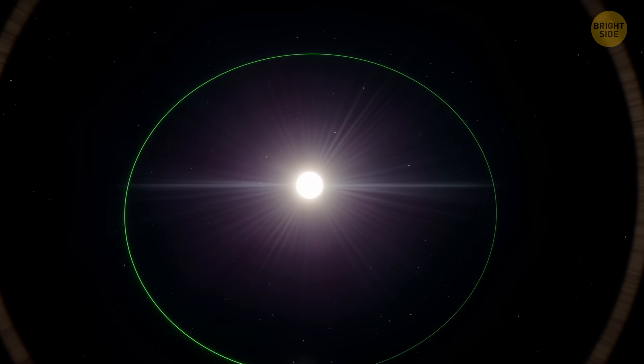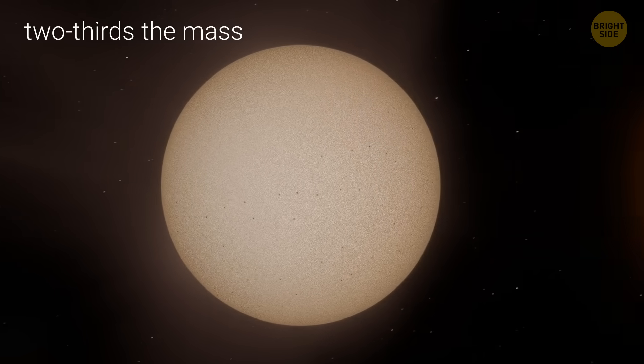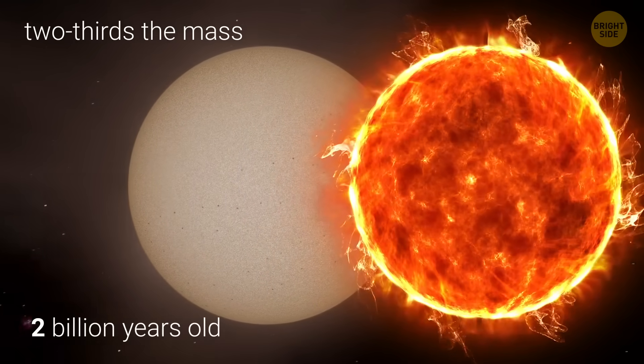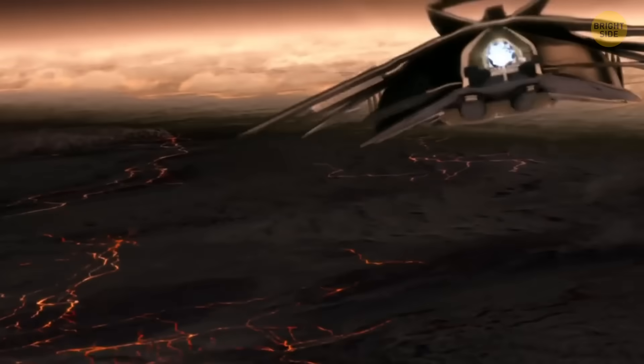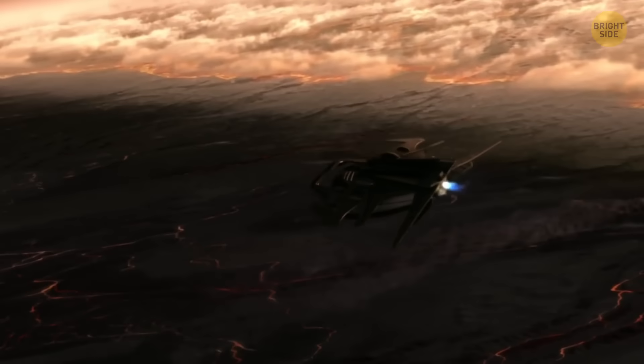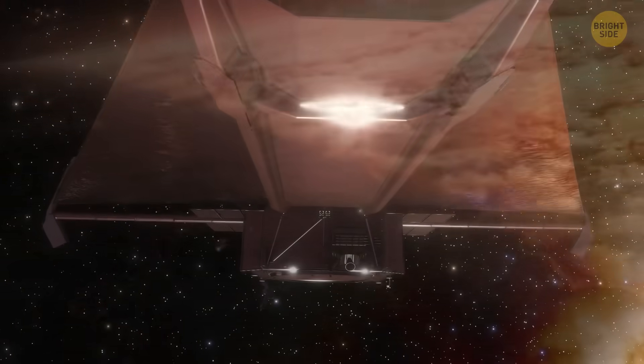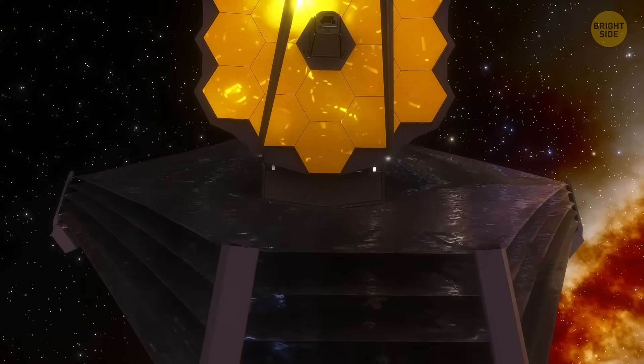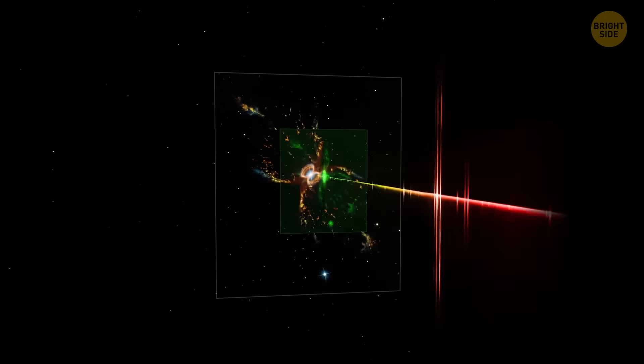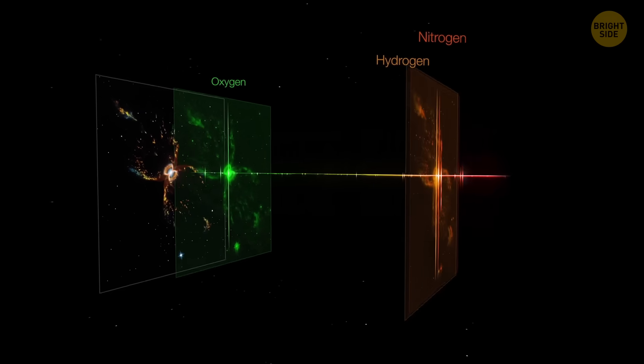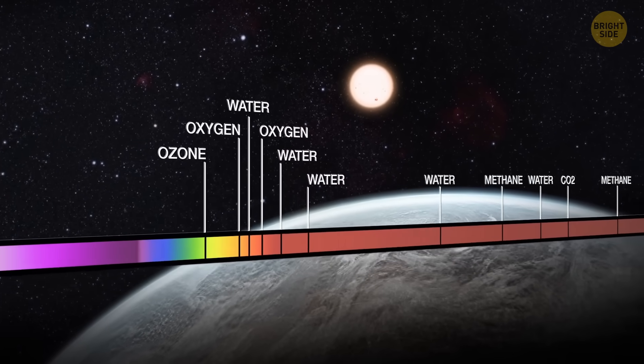As for the host star, TOI 2431 is about two-thirds the mass and size of the Sun. Roughly 2 billion years old, and cooler and dimmer than our Sun. Obviously, TOI 2431b isn't a place for life. It's way too hot, way too extreme. But astronomers think this exoplanet is a prime target for the James Webb Space Telescope. It could study the way light changes as the planet orbits to figure out whether it has an atmosphere and what its molten surface is really made of.